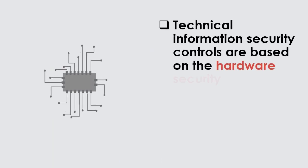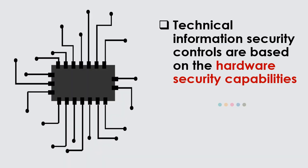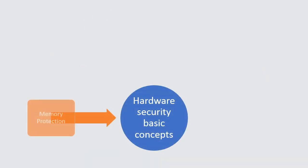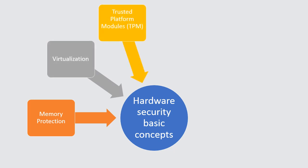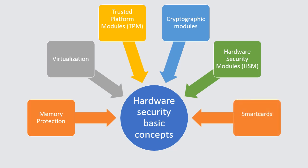Technical information security controls are based on the hardware security capabilities. Hardware security basic concepts are: memory protection, virtualization, trusted platform modules (TPM), cryptographic modules, hardware security modules (HSM), and smart cards.